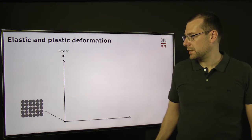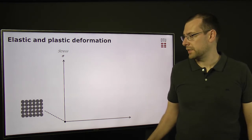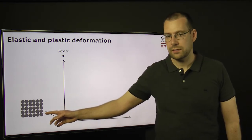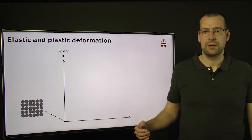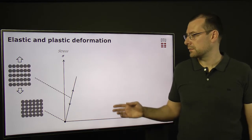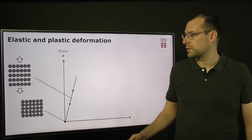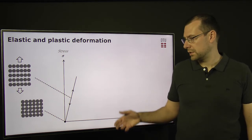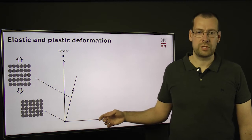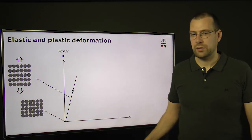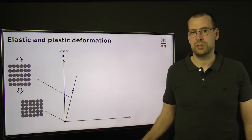Metals consist of metallic atoms that are fixed in a crystal lattice. And if we apply a low stress to this lattice, then we will stretch it. And if we relax the stress, then the lattice will revert to its original shape. And we call this elastic deformation, which is non-permanent.